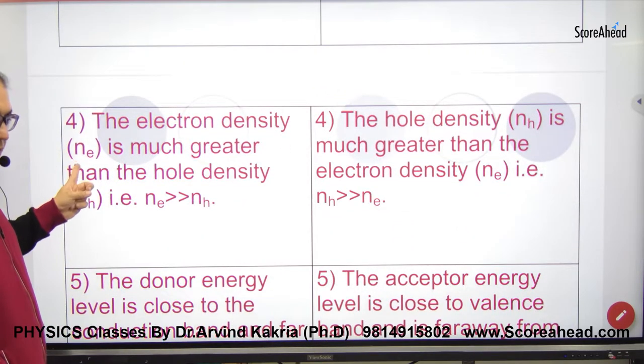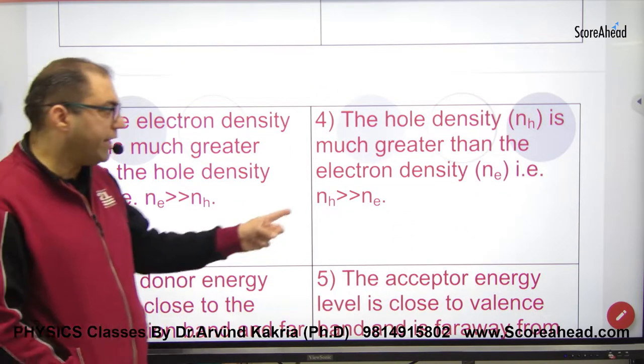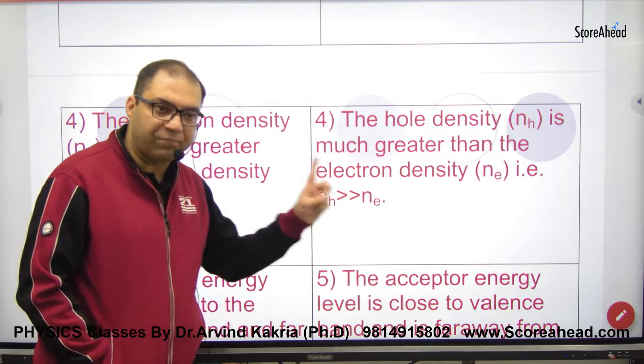In p-type, hole density is greater than electron density. In n-type, electron density is greater than hole density.